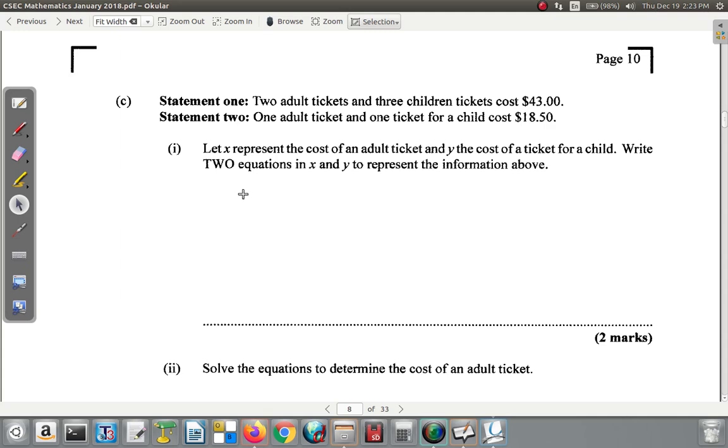So, let X represent the cost of an adult ticket and Y the cost of a ticket for a child. Write two equations in X and Y to represent the information above. Let's see.